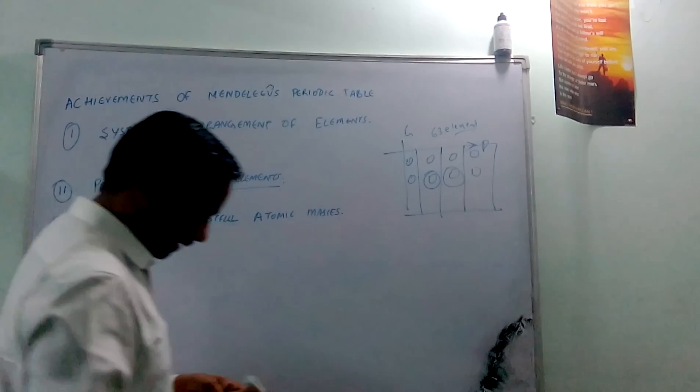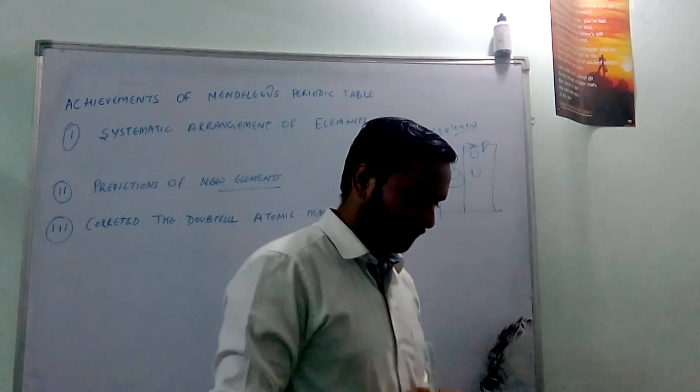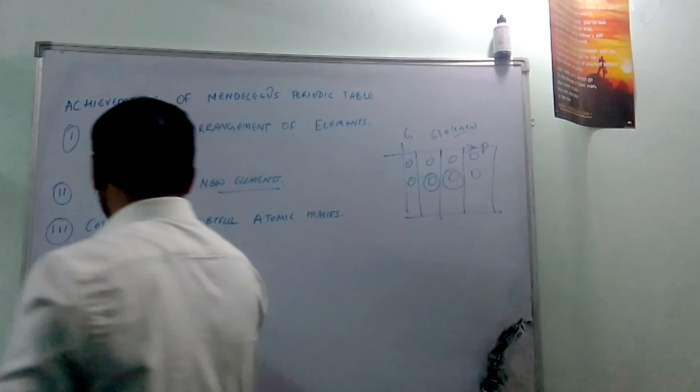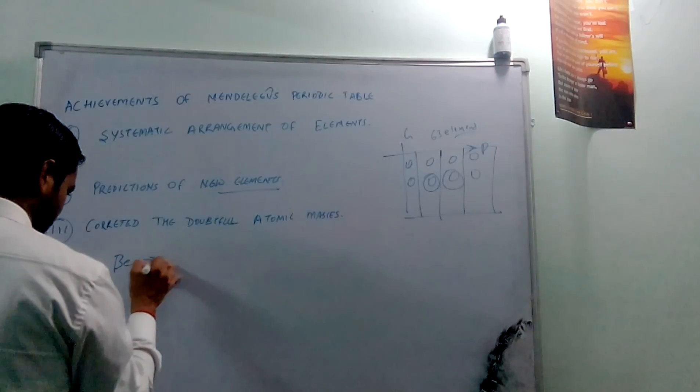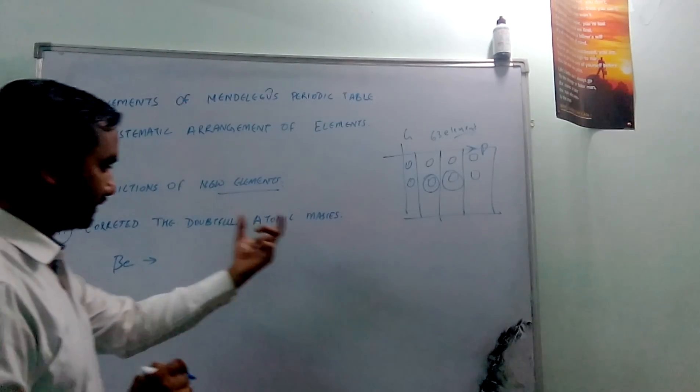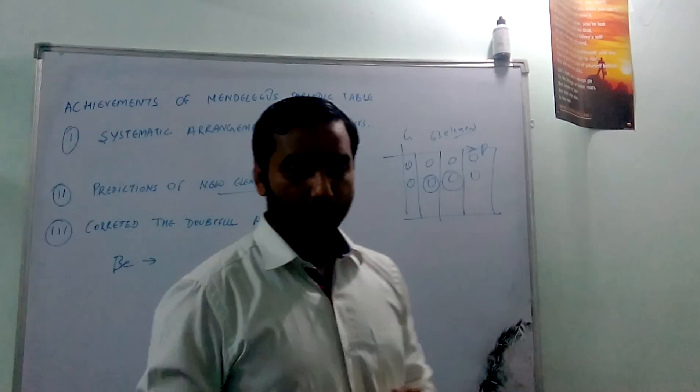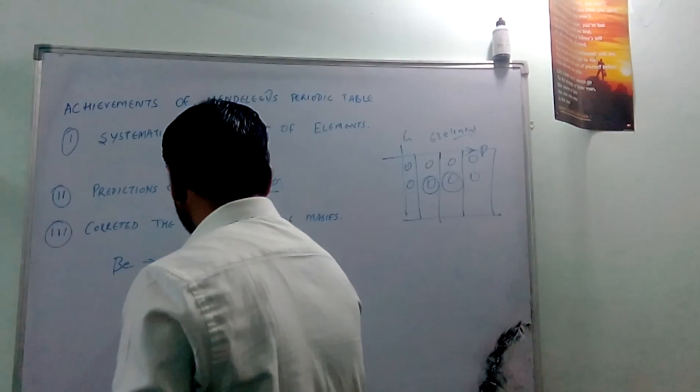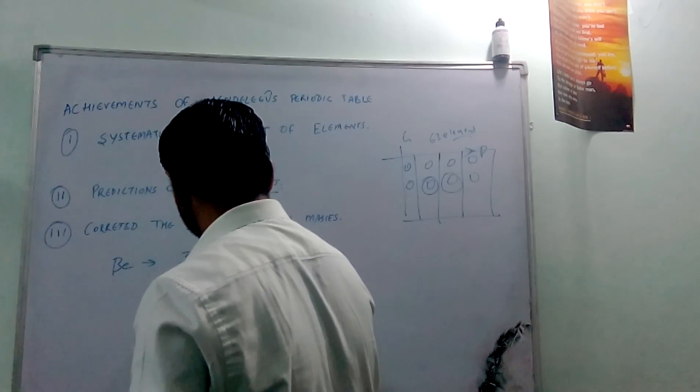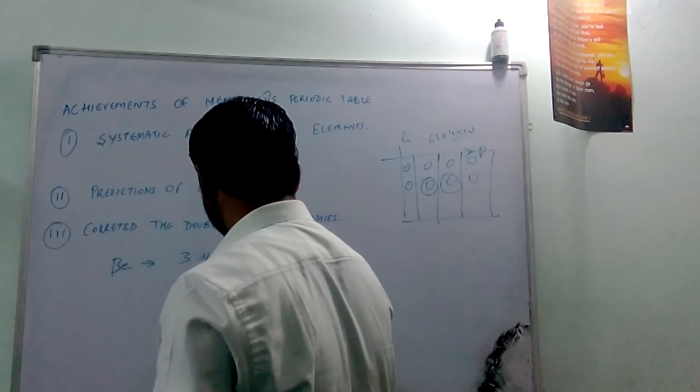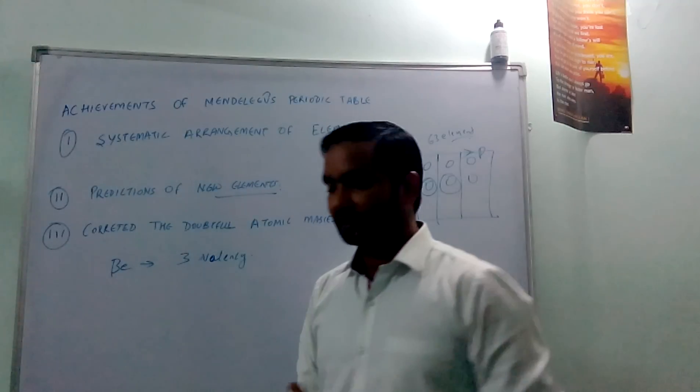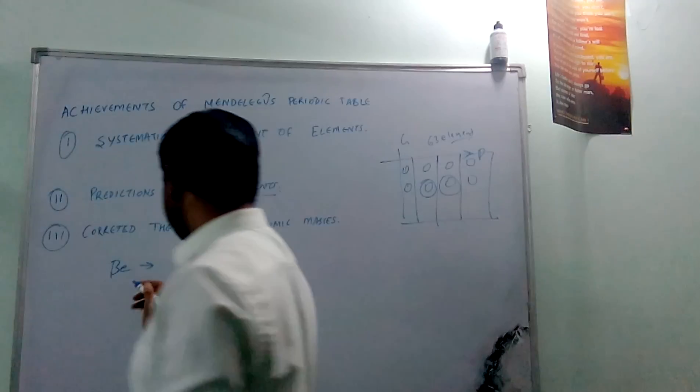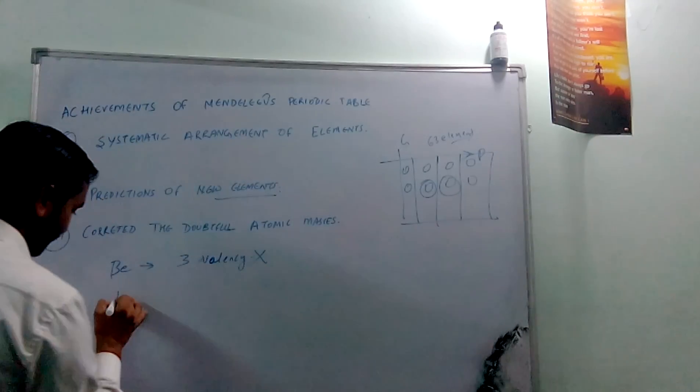At that moment, there were some disputes in particular elements like beryllium with their atomic mass, and the same happened regarding their chemical properties. Like for beryllium, earlier they stated that its valency is 3, so it should be in the group of boron. But he stated that beryllium's valency is 2.